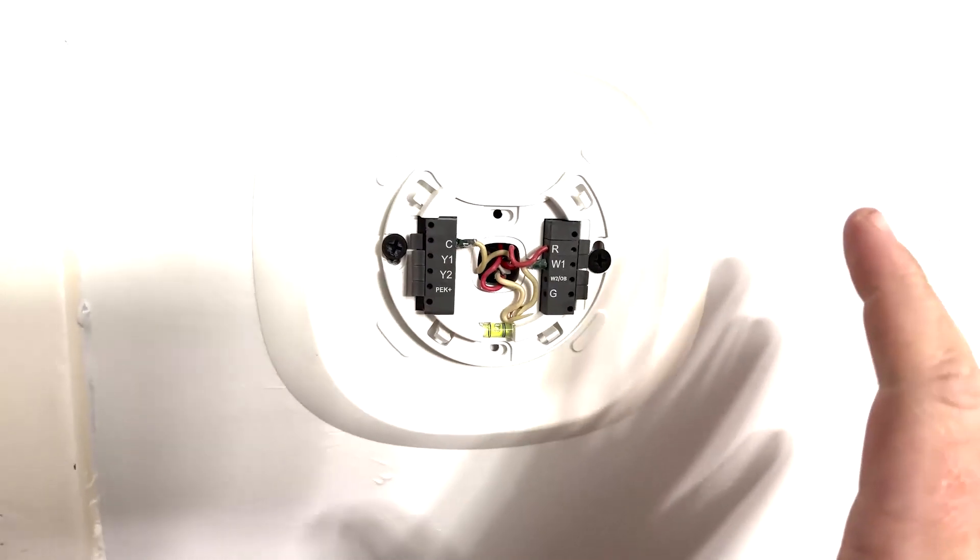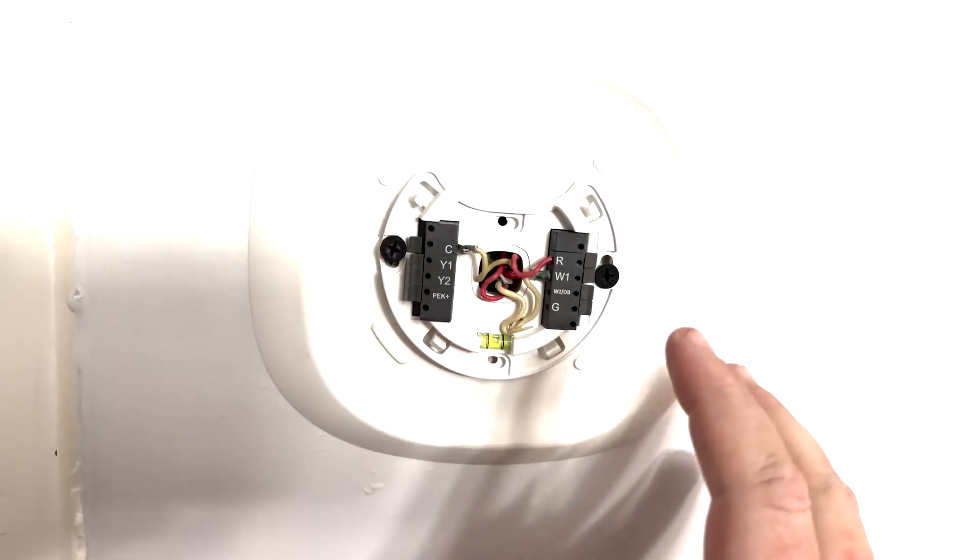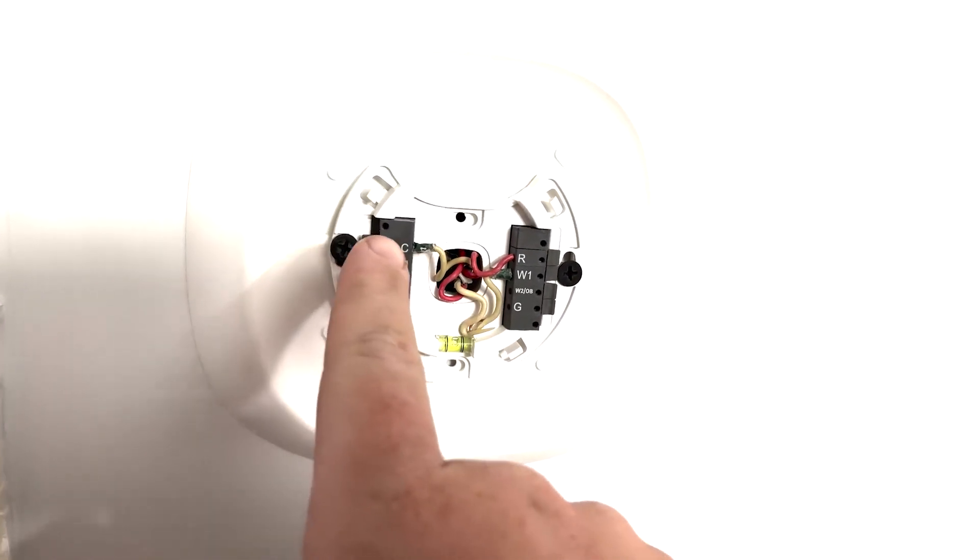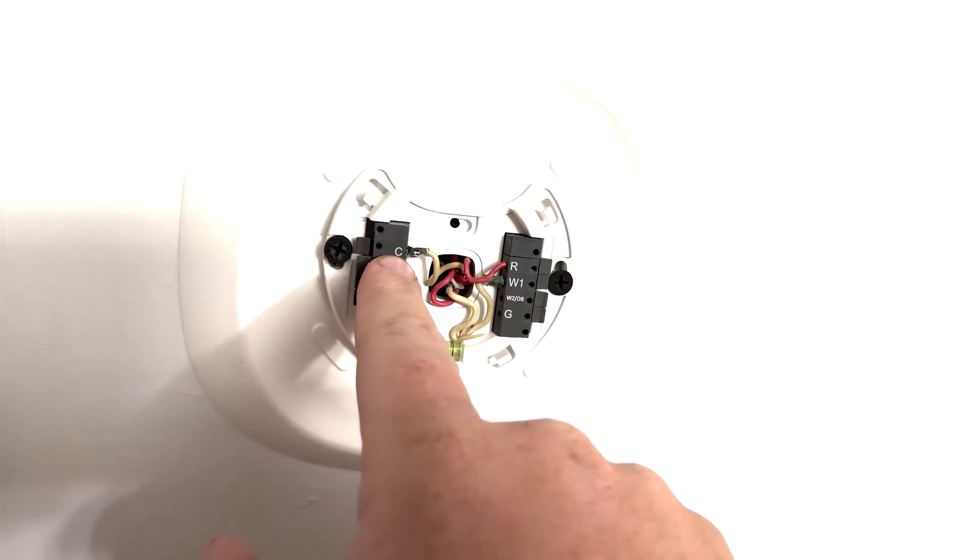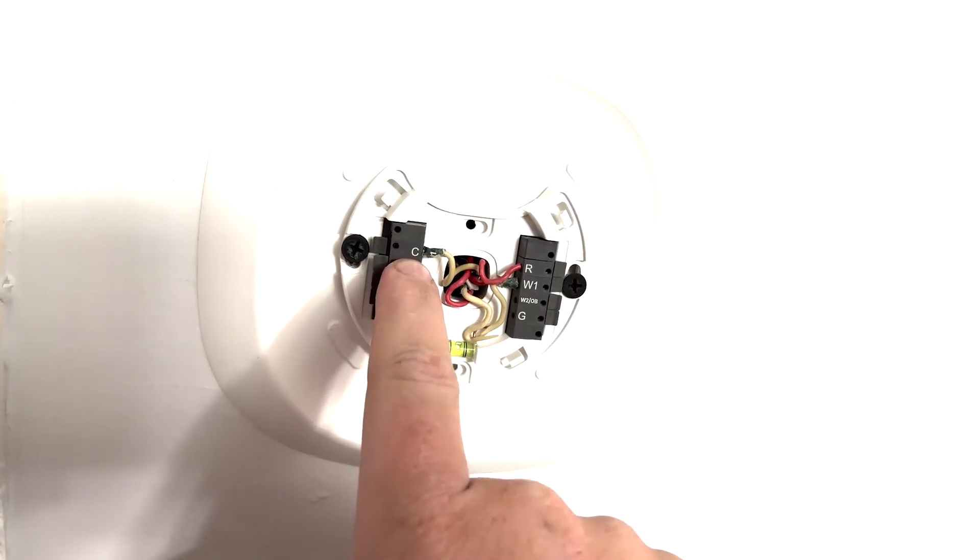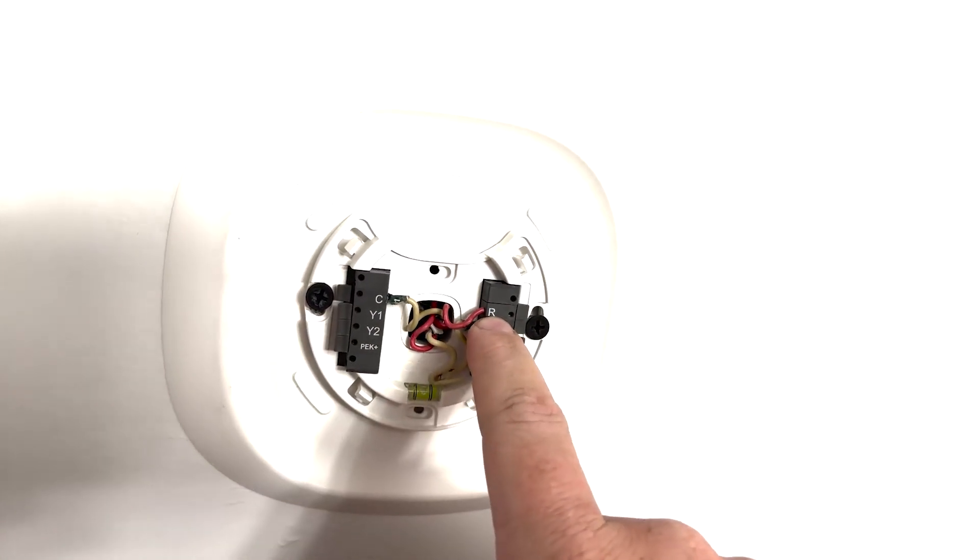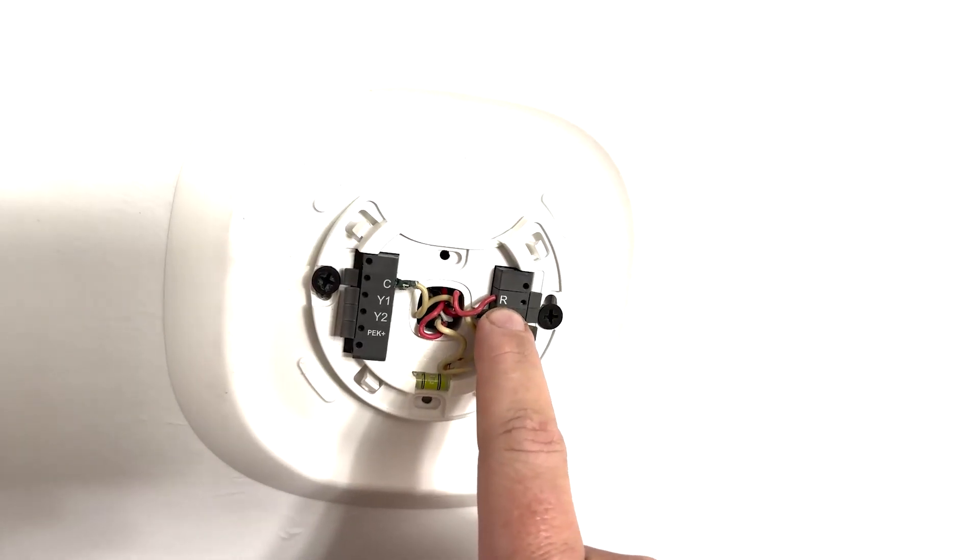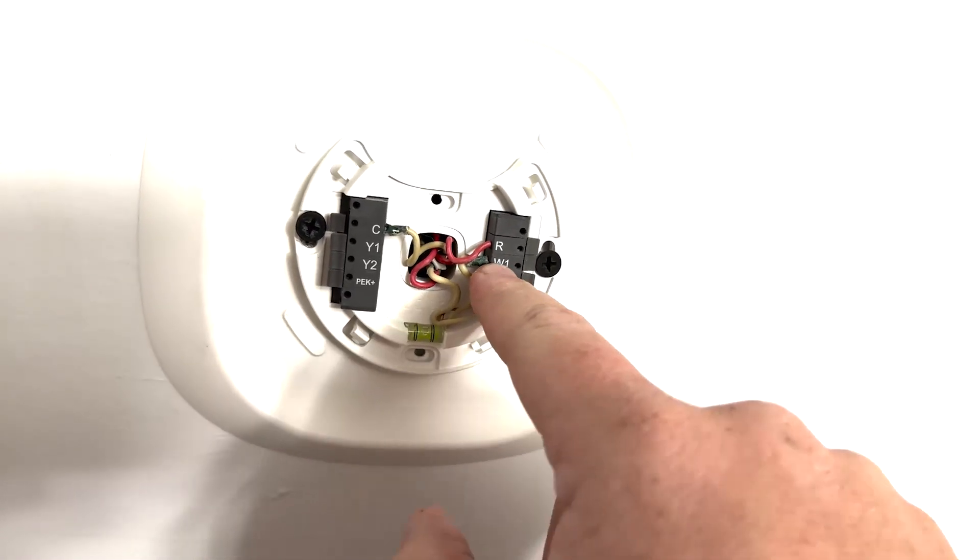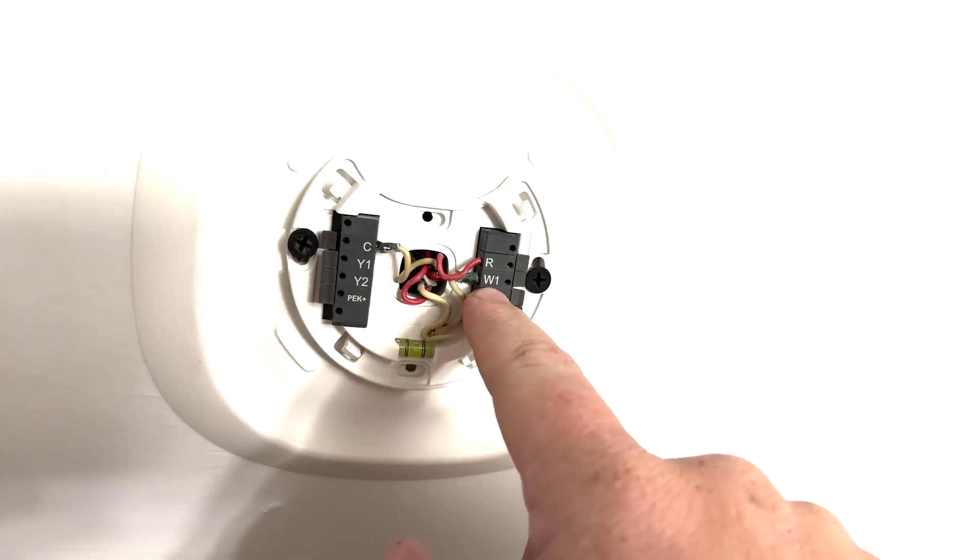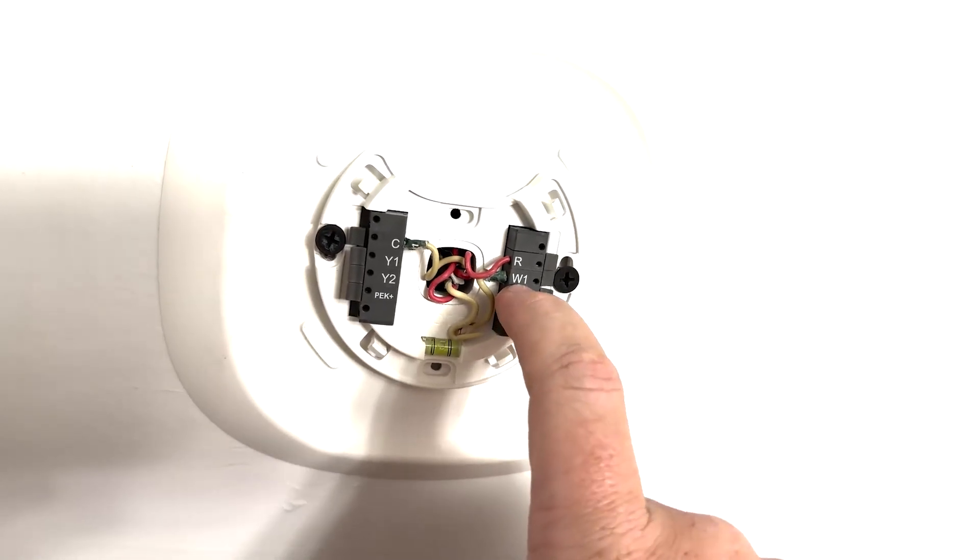So now you're going to look at the thermostat. You're going to have those wires coming up from downstairs. So this is going to be the C-wire that goes down to the transformer. This is going to be the other wire that goes to the transformer. And this wire here is going to be that single wire that goes into that relay into the central terminal on the top.